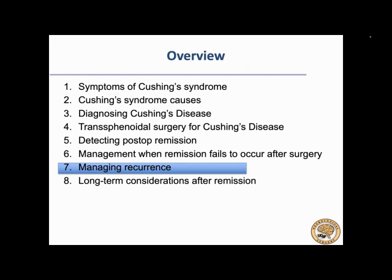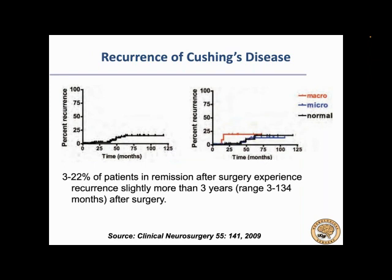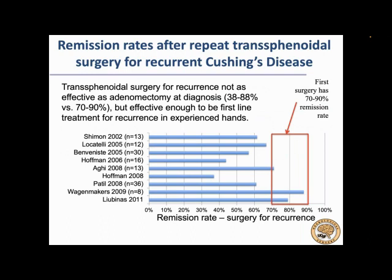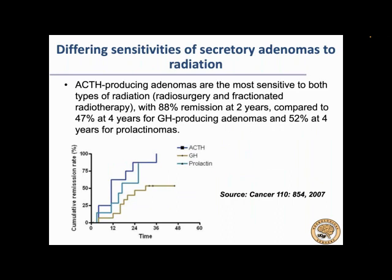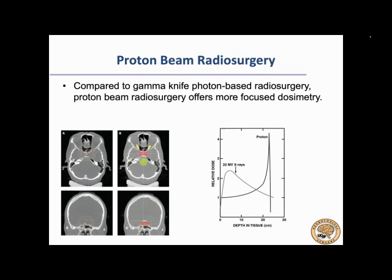Managing recurrence: long-term recurrence occurs in about 10–20% of cases. Surgery for recurrence remains frontline therapy, effective in about 70–90% of recurrences, very similar to first-time surgery success rates, though remission can be a little slower. Radiosurgery can also be used for patients who fail to achieve remission or who recur — ACTH-producing adenomas are fairly sensitive to radiation, but you need a good target, so it's not advisable for negative MRI cases. It's important when undergoing radiosurgery for Cushing's disease to hold suppressive medications that can increase tumor proliferation rate and make it a better radiosurgical target. Radiation carries a risk of hypopituitarism but is still preferable over hypophysectomy.